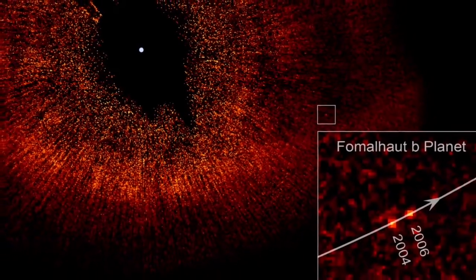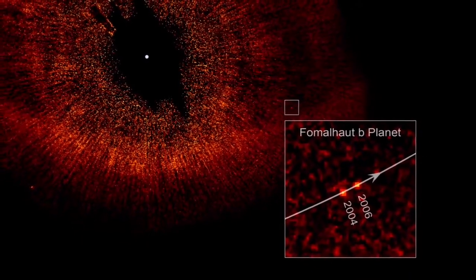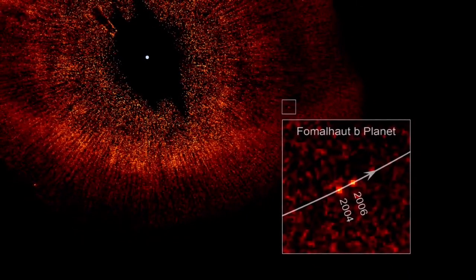This time, Hubble has given us a rare direct image of an extrasolar planet, and what's more, the first in visible light, the type our eyes naturally see.